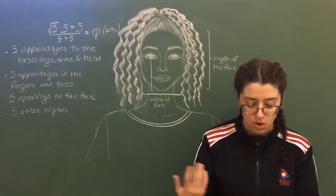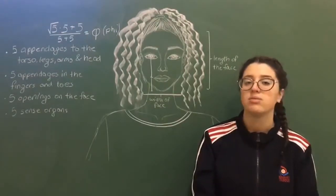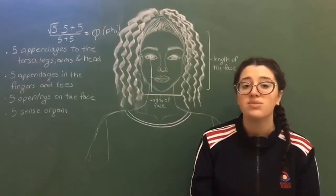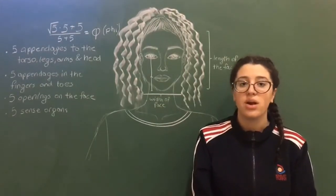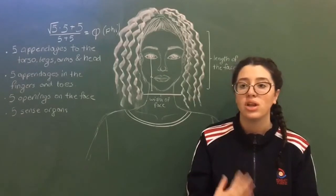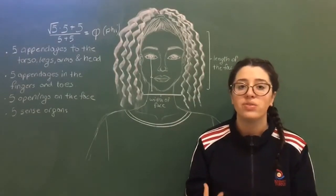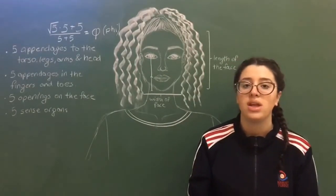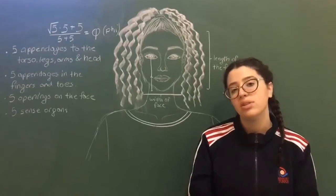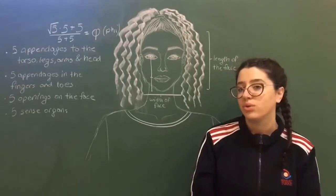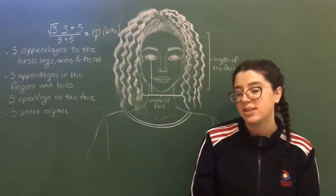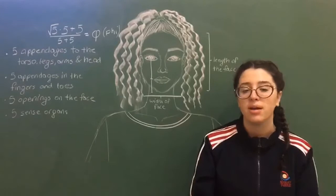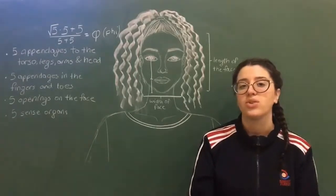The golden ratio, also known as Fibonacci's number, is found everywhere — not only in our body, but in lots of things found in nature. Even if we don't know it, it will always exist and it will always be there. Thanks for watching.